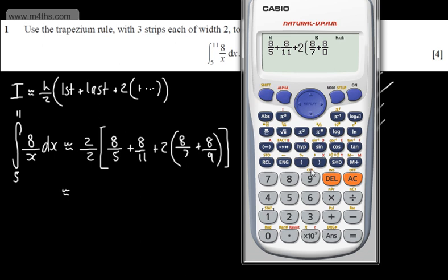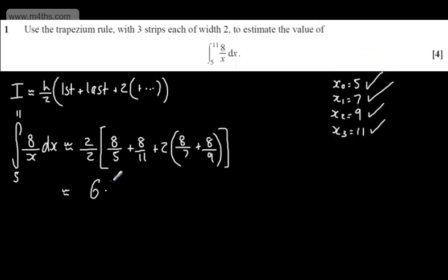Subbing these in, this gives me a decimal answer of 6.3907, so 6.3907 and so on.